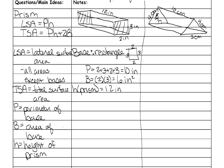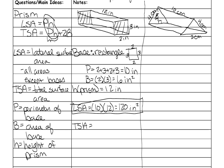Now we plug in and solve. LSA = big P times H = 10 times 12 = 120 inches squared. Area is two-dimensional, so dimensions are squared. For total surface area, we take the lateral surface area and add two times the area of the base: 120 + (2 × 6) = 120 + 12 = 132 inches squared. And we're done.